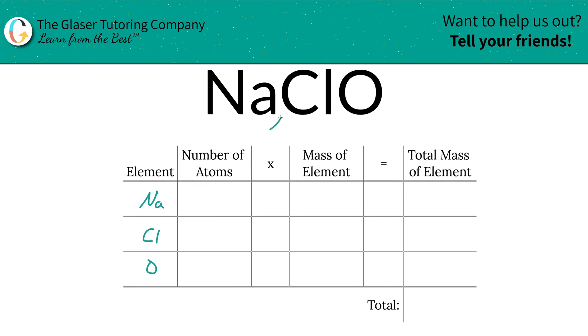Next is to identify the number of atoms, and that's where the subscripts come into play. Now if you don't see anything down there, just put a one in there because that's what it is assumed to be. So we've got one atom of each basically.